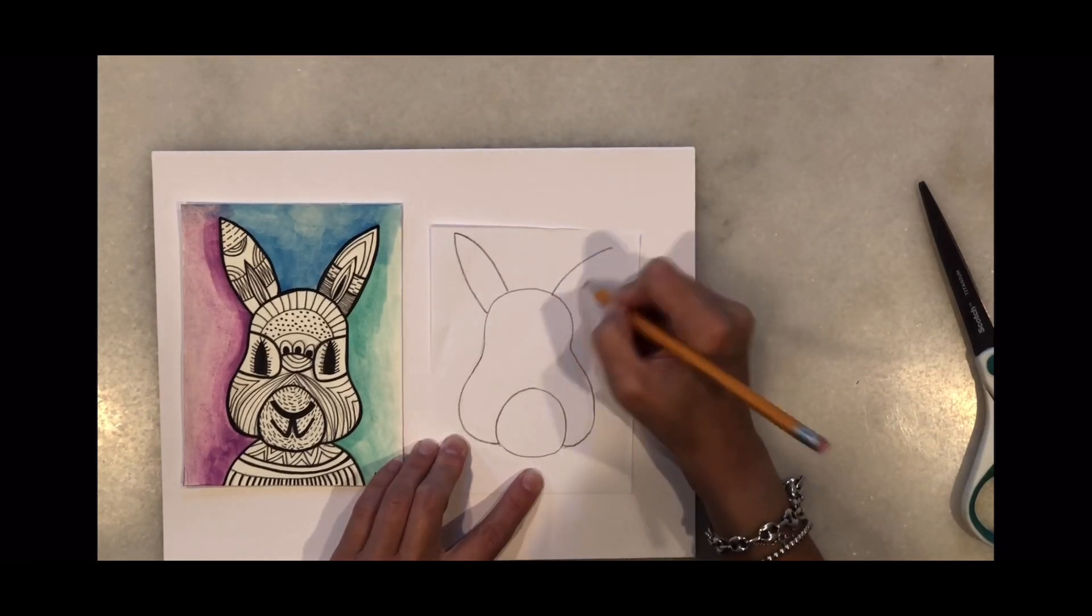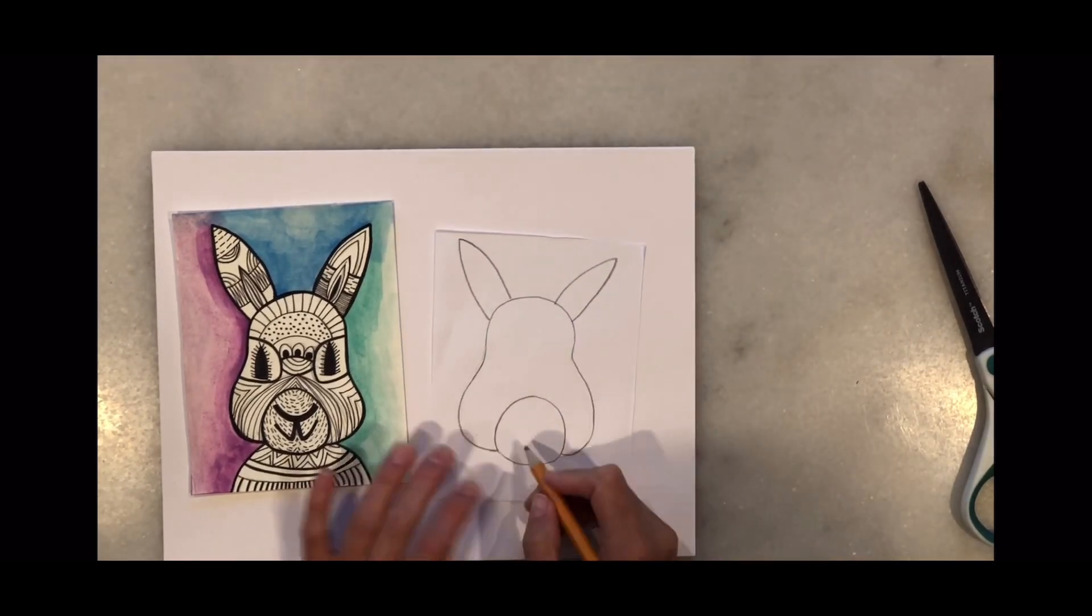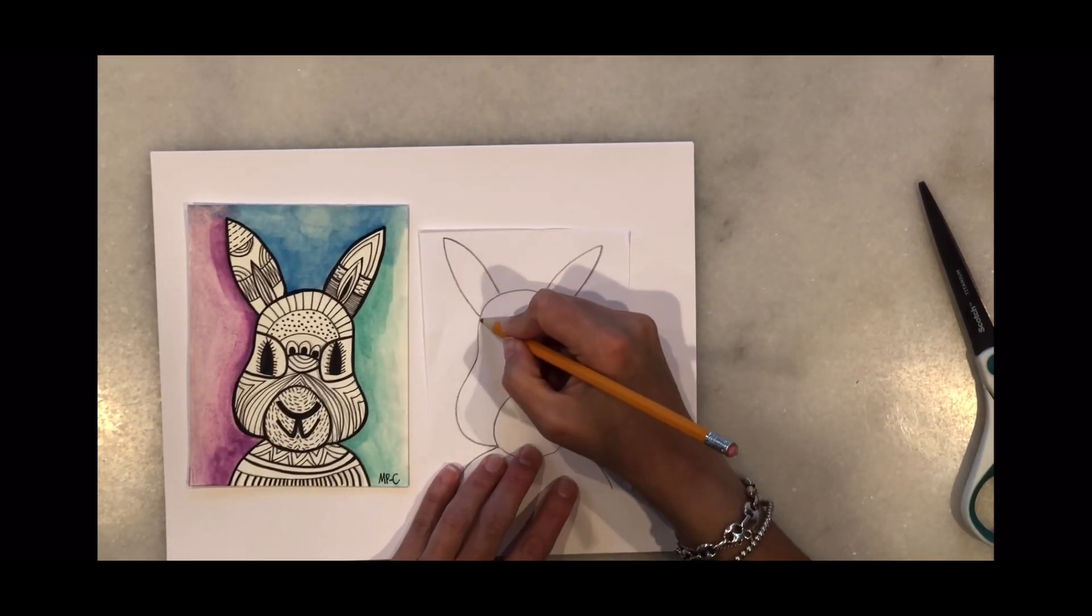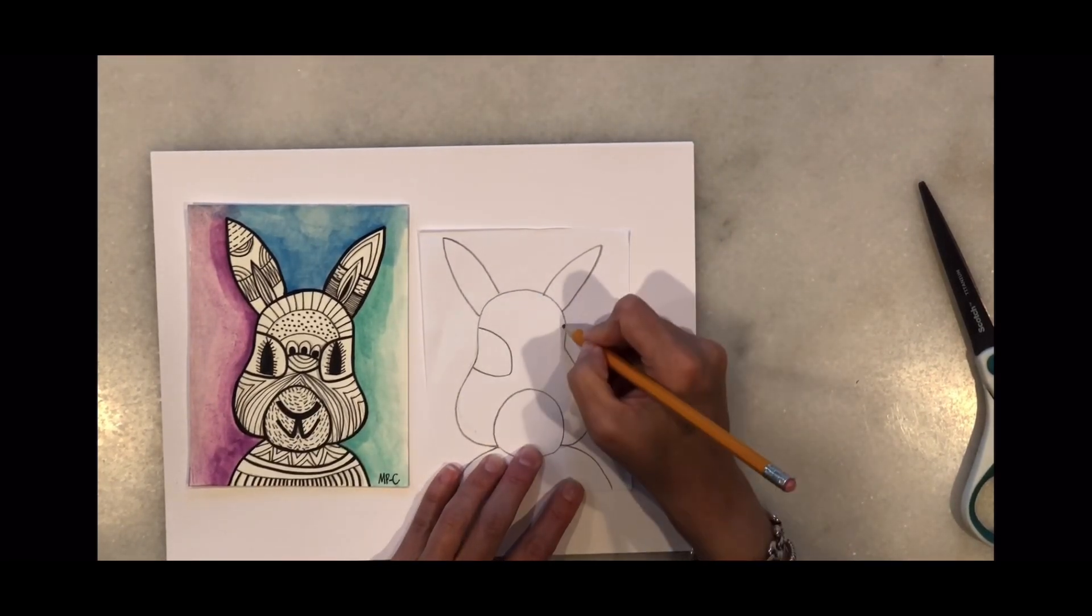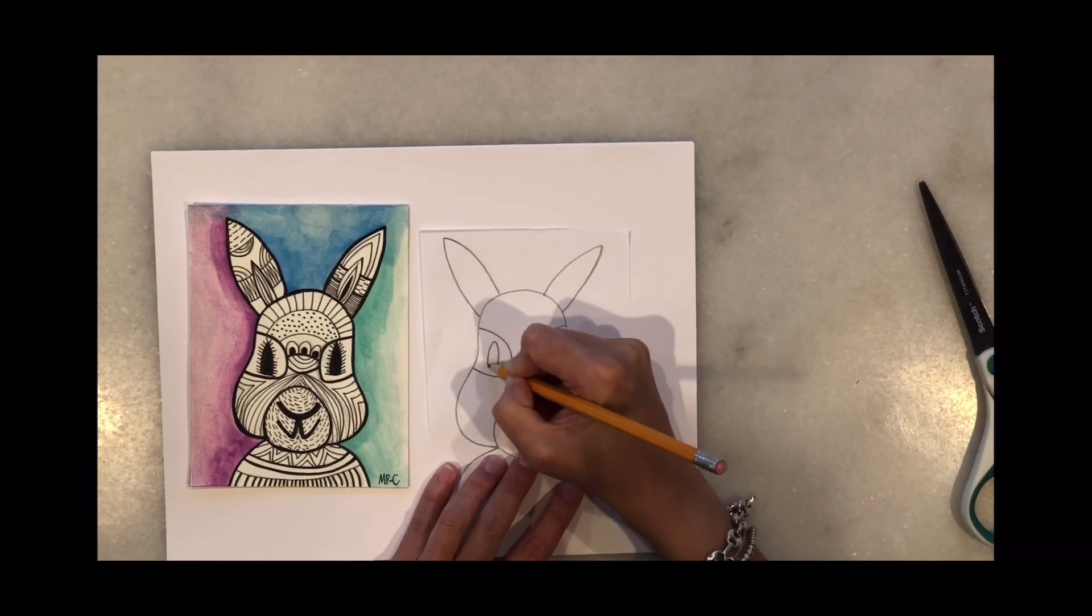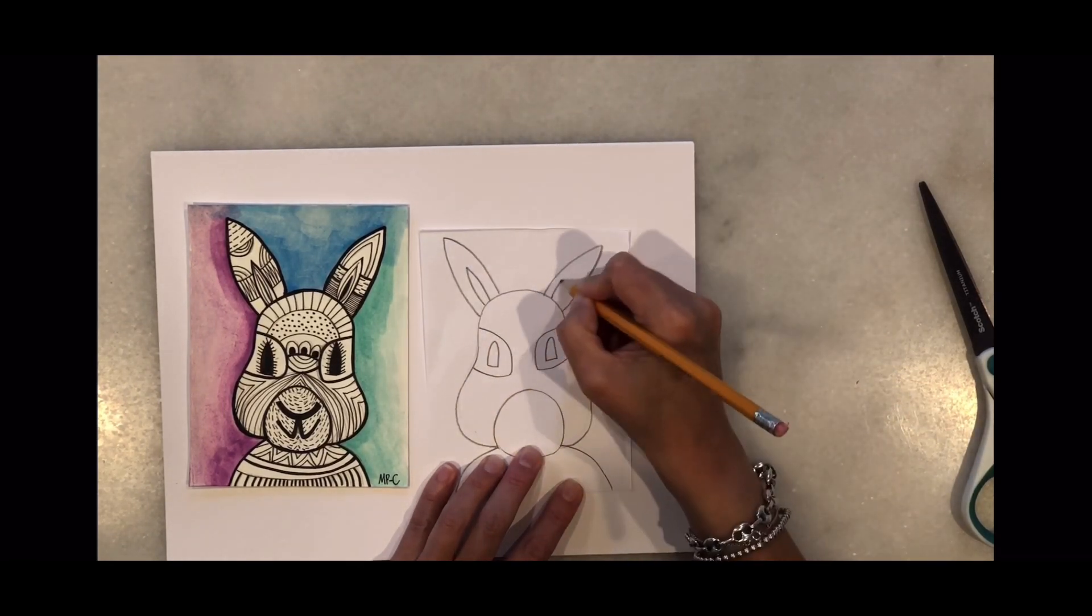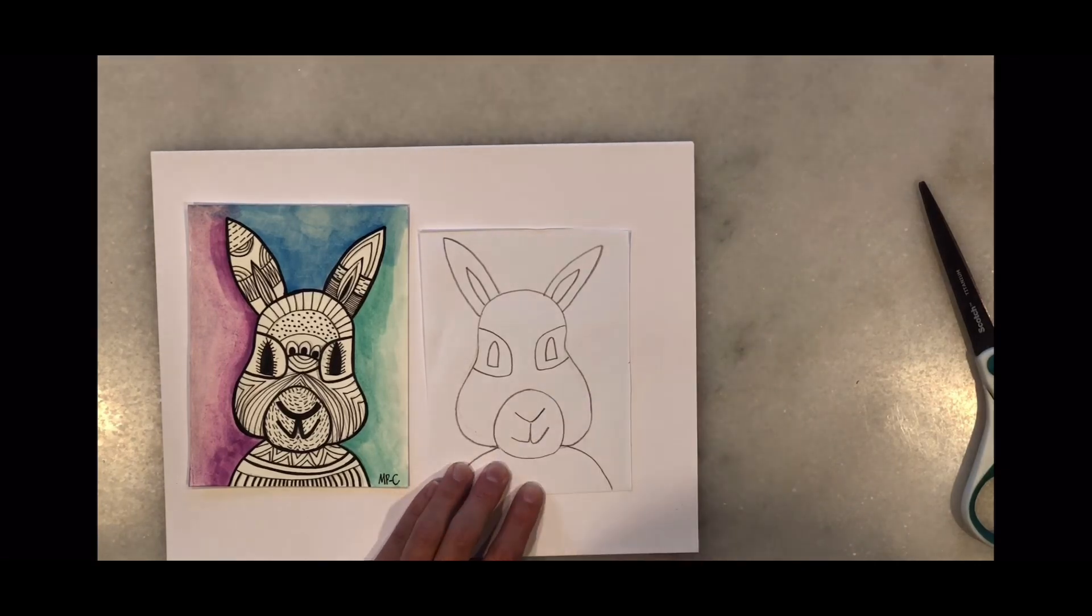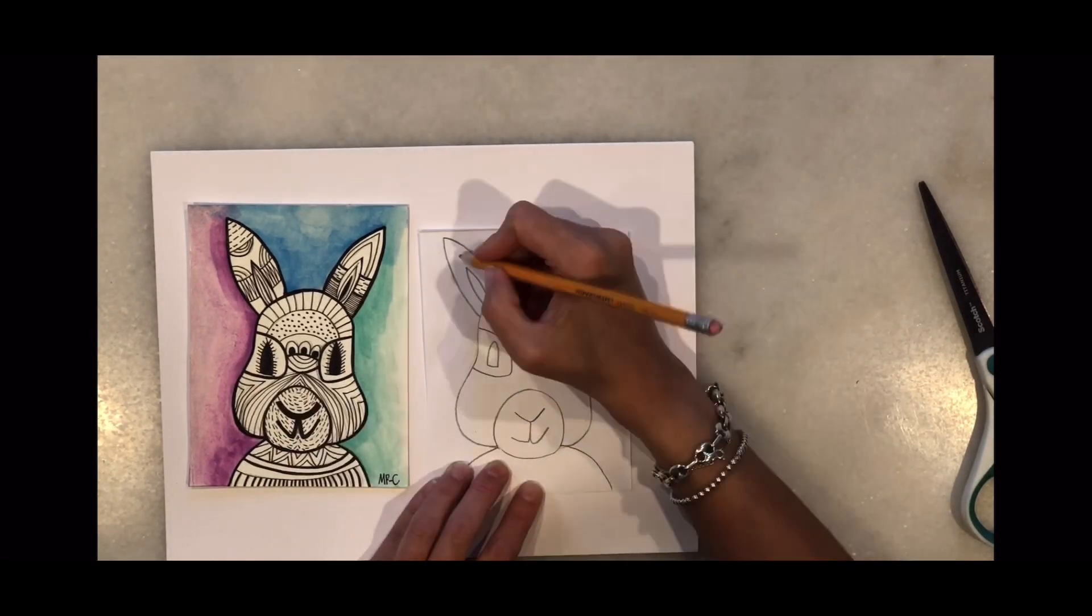Now we're going to add some ears, some details, the rest of the body. We're going to add these big circles, half circles for the eyes. Remember this is an abstract bunny, it's not like a real bunny so it doesn't matter if it doesn't look exactly like a real bunny.